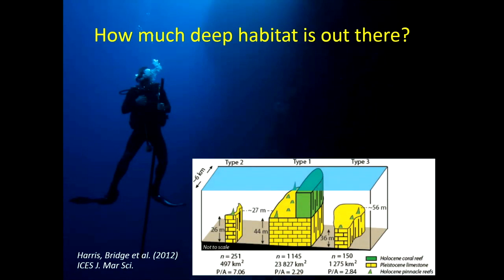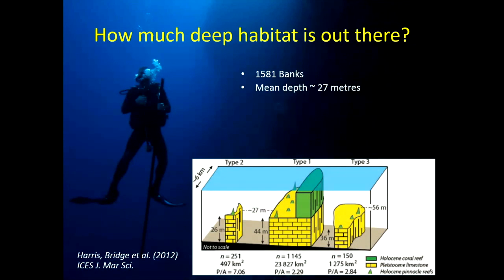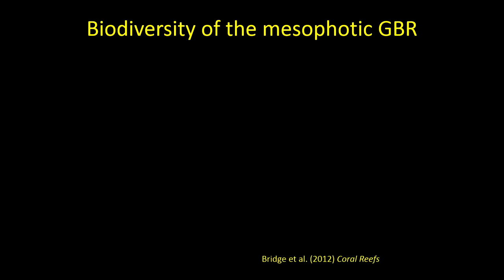How much reef habitat is out there? This was a study I was involved in with scientists from Geoscience Australia and the University of Sydney, published in 2012. We looked at newly generated bathymetric data from the entire Great Barrier Reef and found a huge amount of reef habitat on these deep banks - over 1,500 banks, with a main depth of about 27 metres and a total area of about 41,000 square kilometres. Since the coral reef area on the Great Barrier Reef is currently regarded as about 20,000 square kilometres, if we include this deep habitat we're effectively doubling the amount of reef habitat out there.